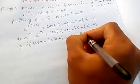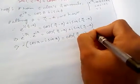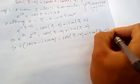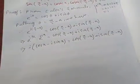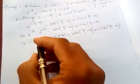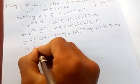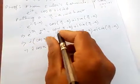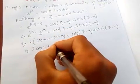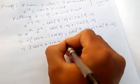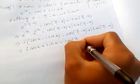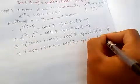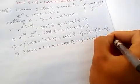Multiplying through, we get i cos x minus i squared sin x, which equals cos(π/2 - x) plus i sin(π/2 - x). Since i squared = -1, this simplifies to sin x plus i cos x.